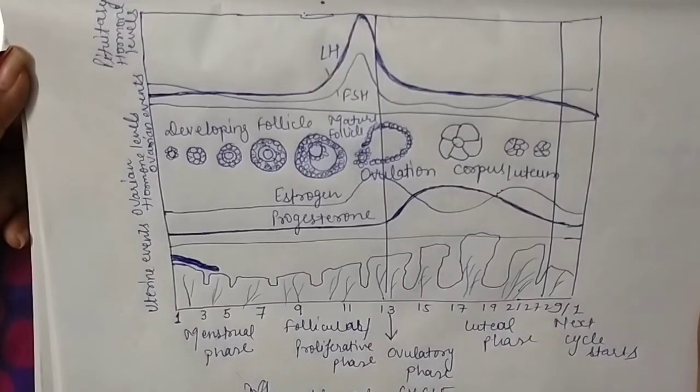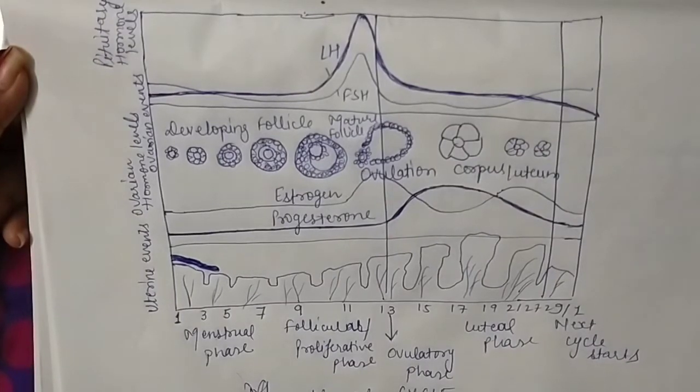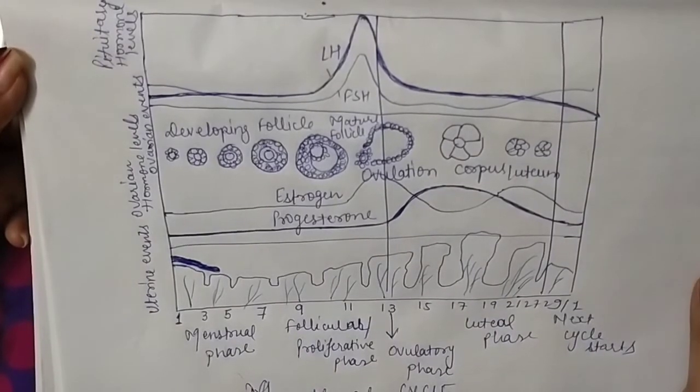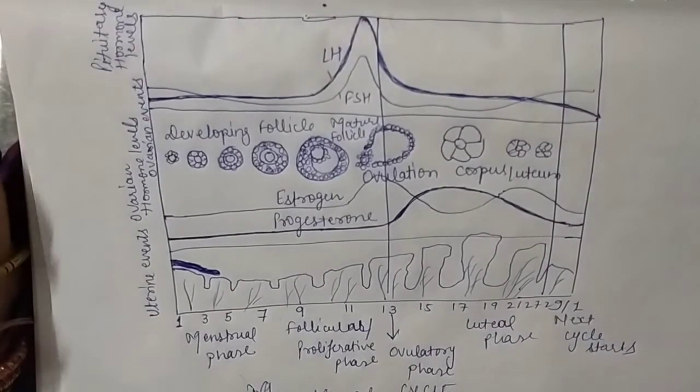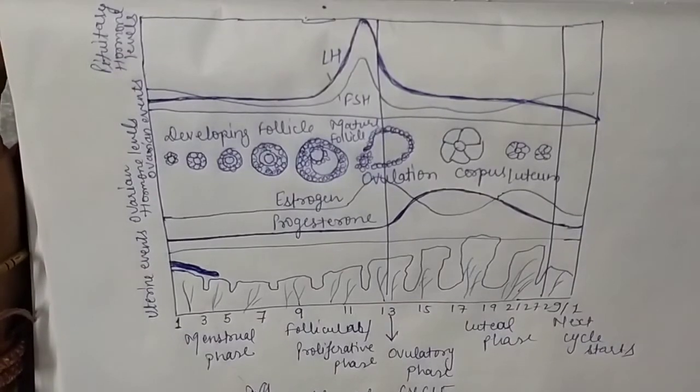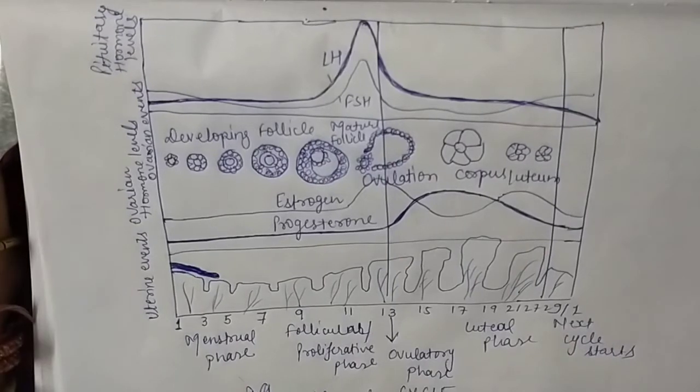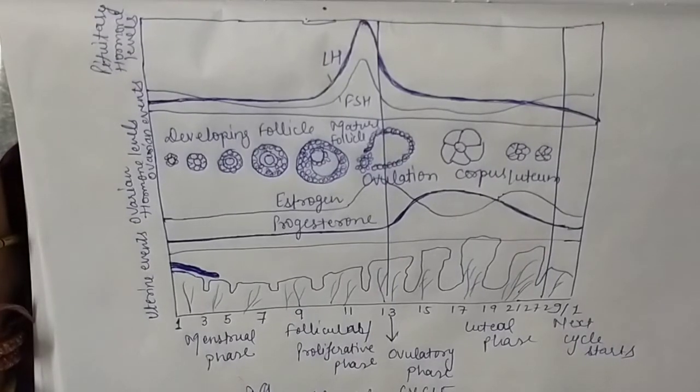Good morning to class 12 biology students. After completing the process of gametogenesis, spermatogenesis, oogenesis, and structure of sperm and ova, I'm going to start the next topic of this chapter: the menstrual cycle. In human females and primates like apes and monkeys, there are cyclic changes in the ovary that are essential for fertility.